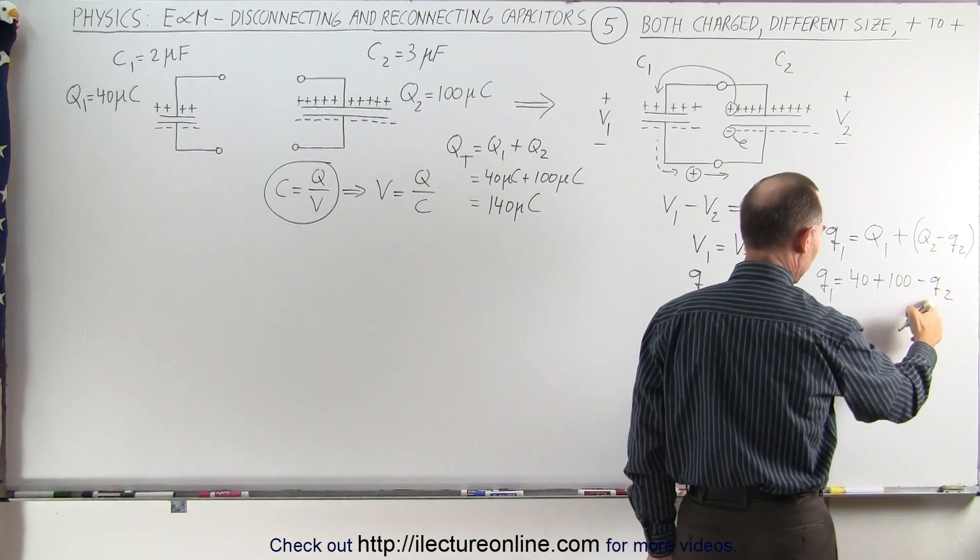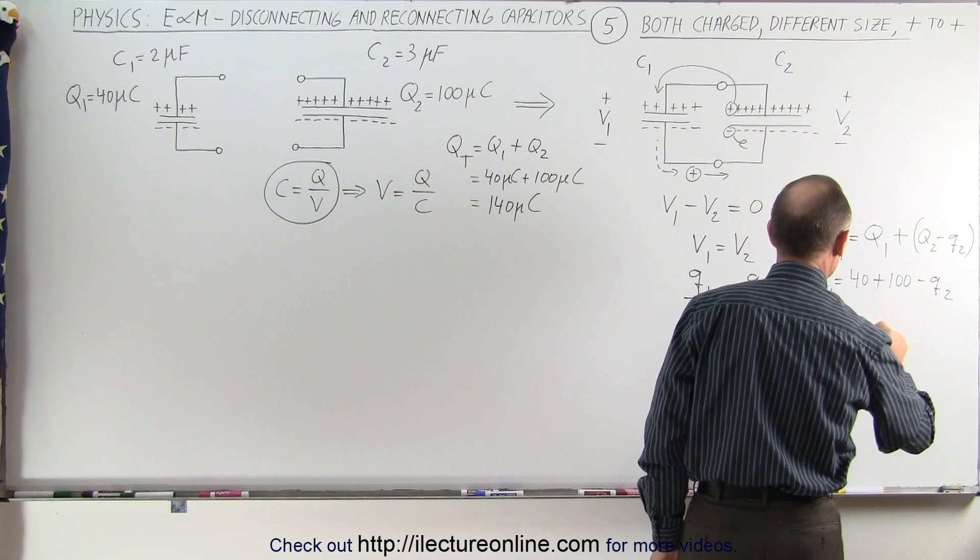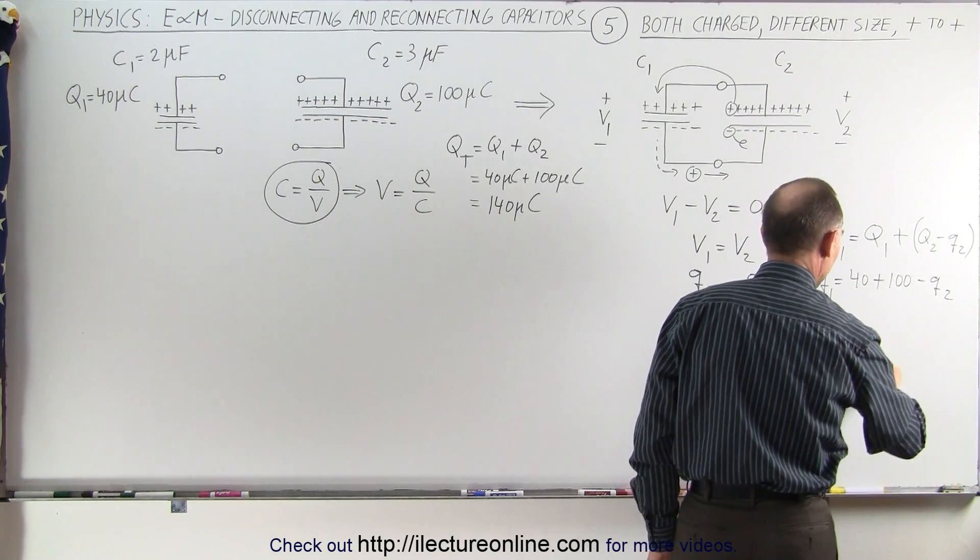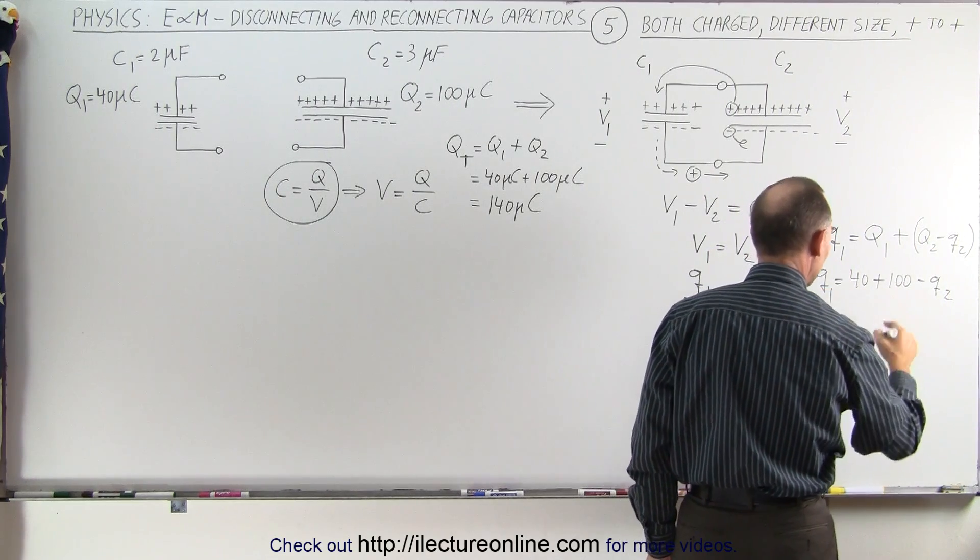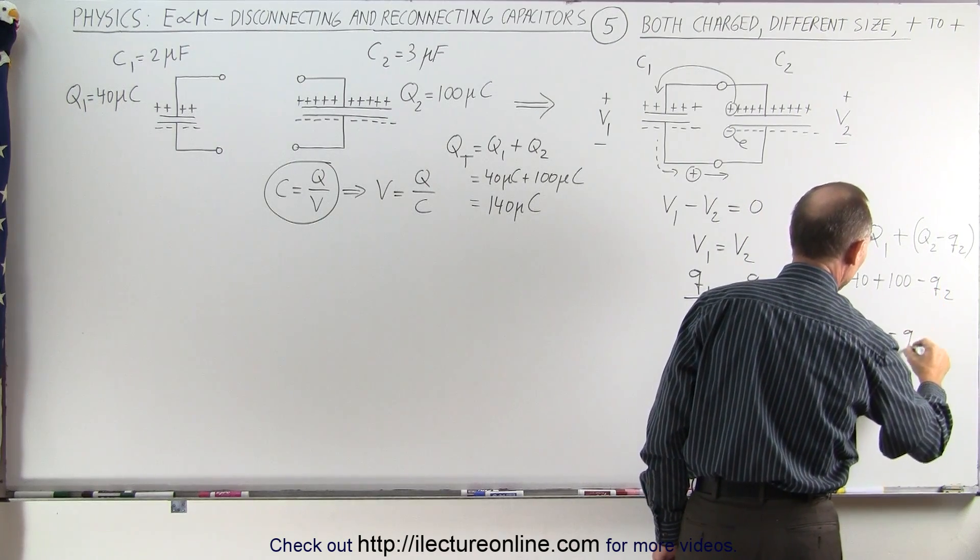Or if I solve this for q2, I can say that q2 is equal to, oh, let me, what I've done is I moved q2 over here, became positive q2. Add these two together, that gives me 140, and moving q1 over here gives me minus q1.